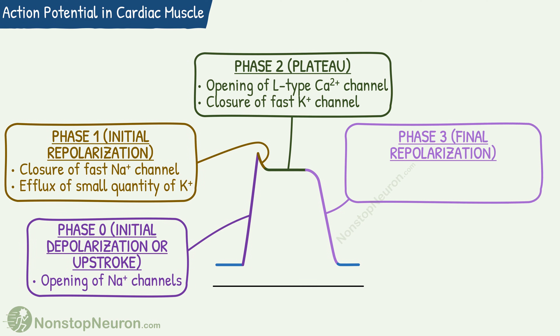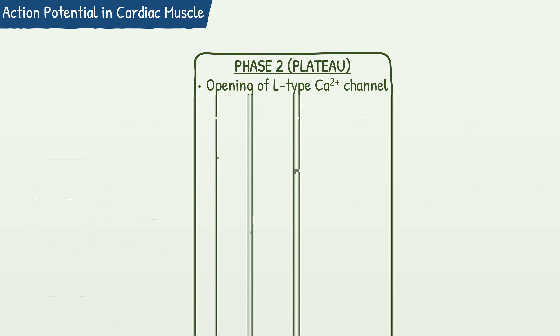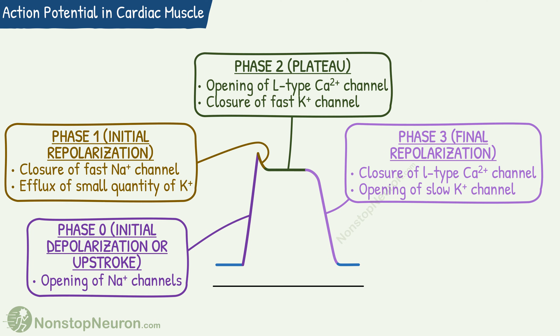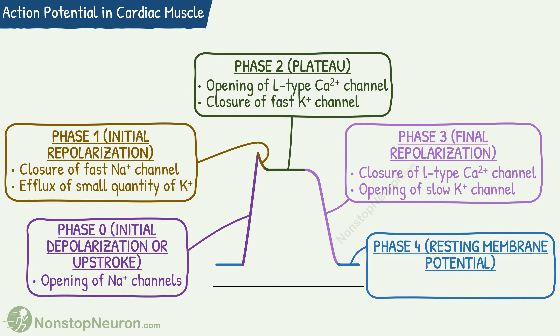Phase 3 or final repolarization is due to the closure of L-type calcium channels that prevent further calcium entry, and opening of slow potassium channels leading to potassium efflux. Phase 4 is resting membrane potential till the next action potential. Resting membrane potential in the myocyte is about minus 90 mV. So this was the action potential in the cardiac myocyte.